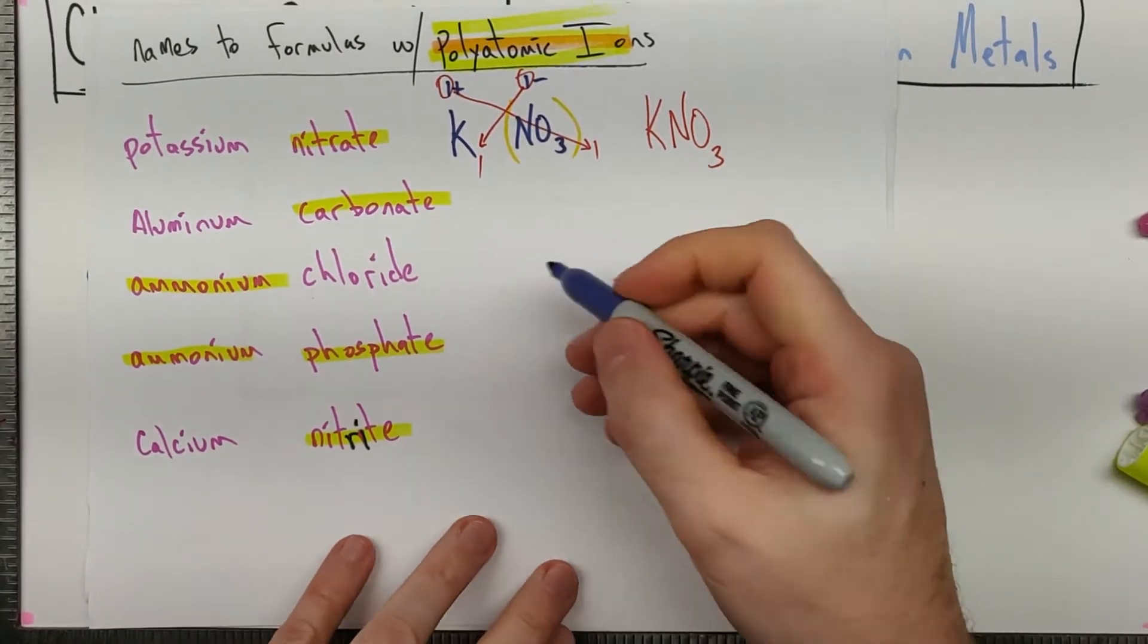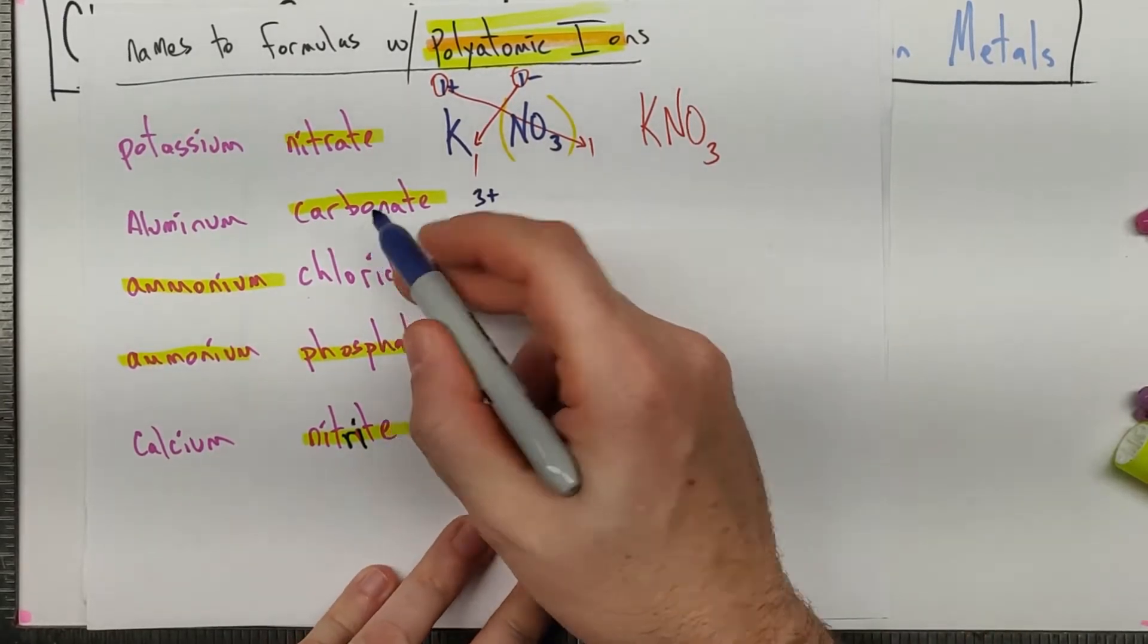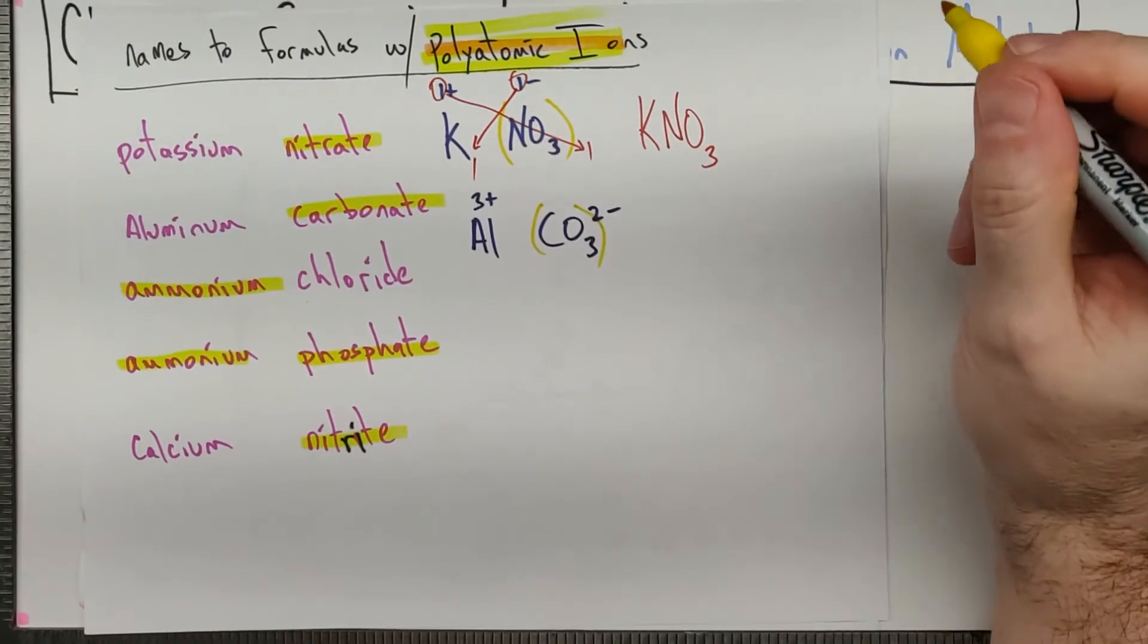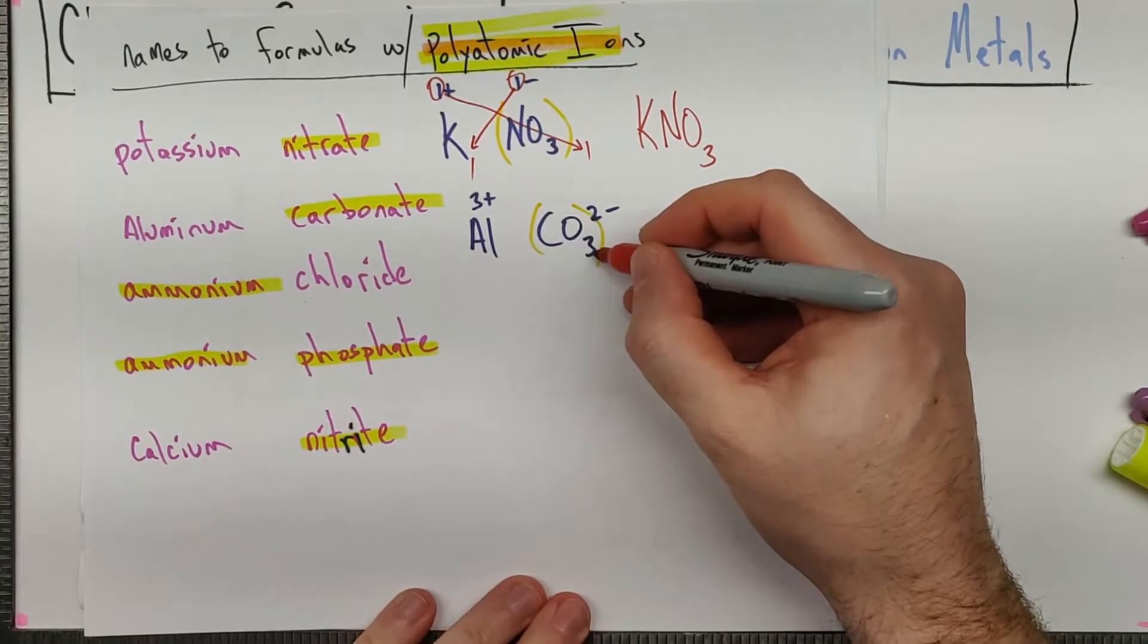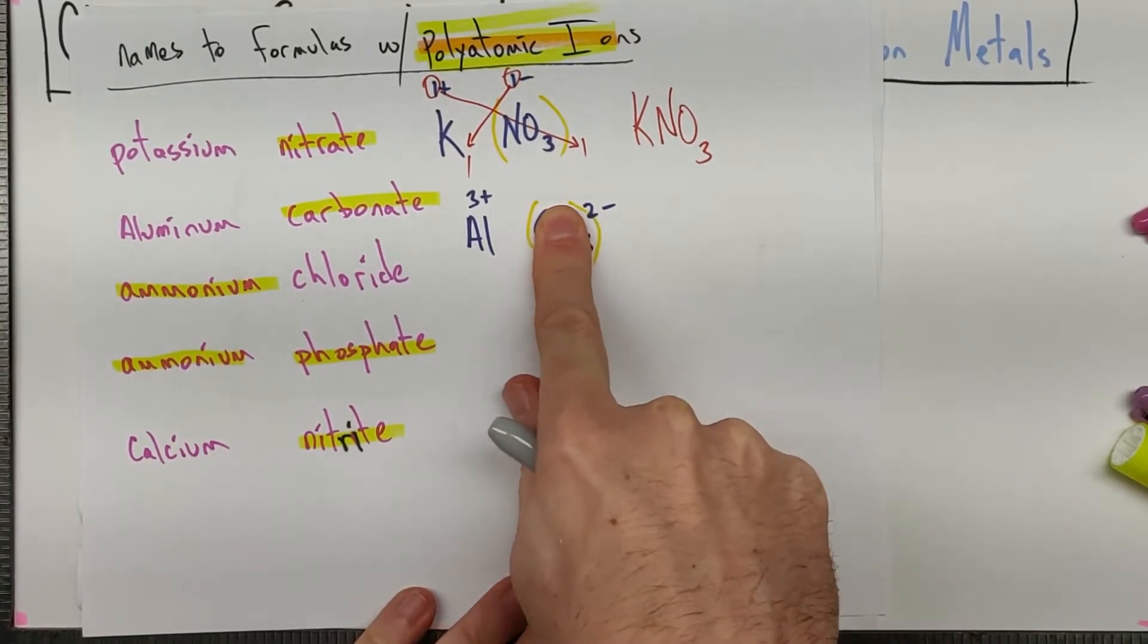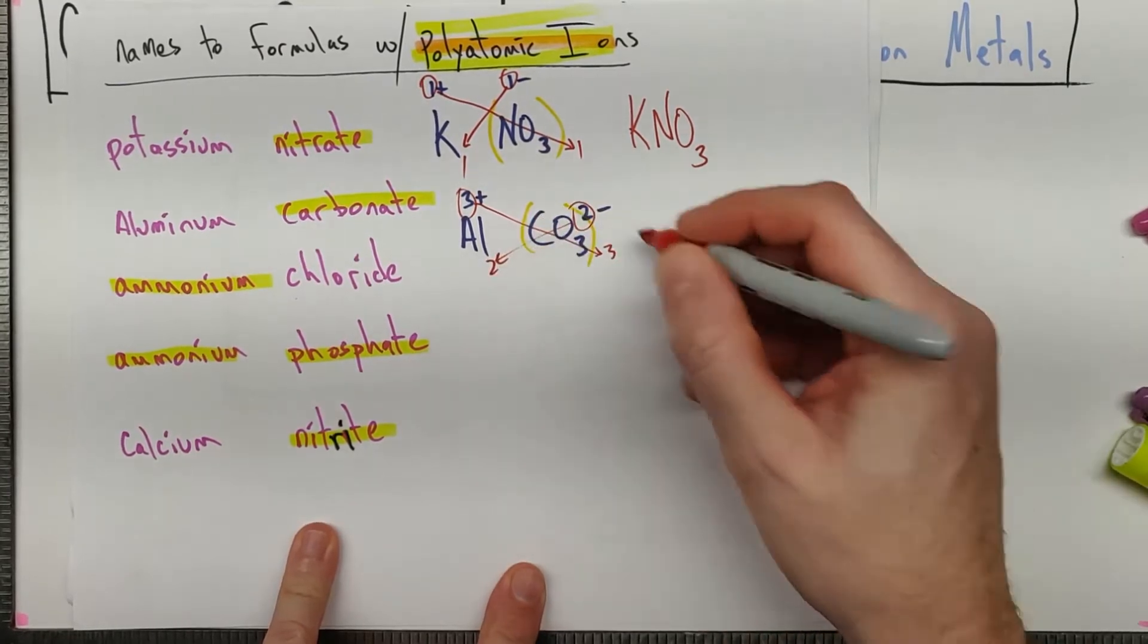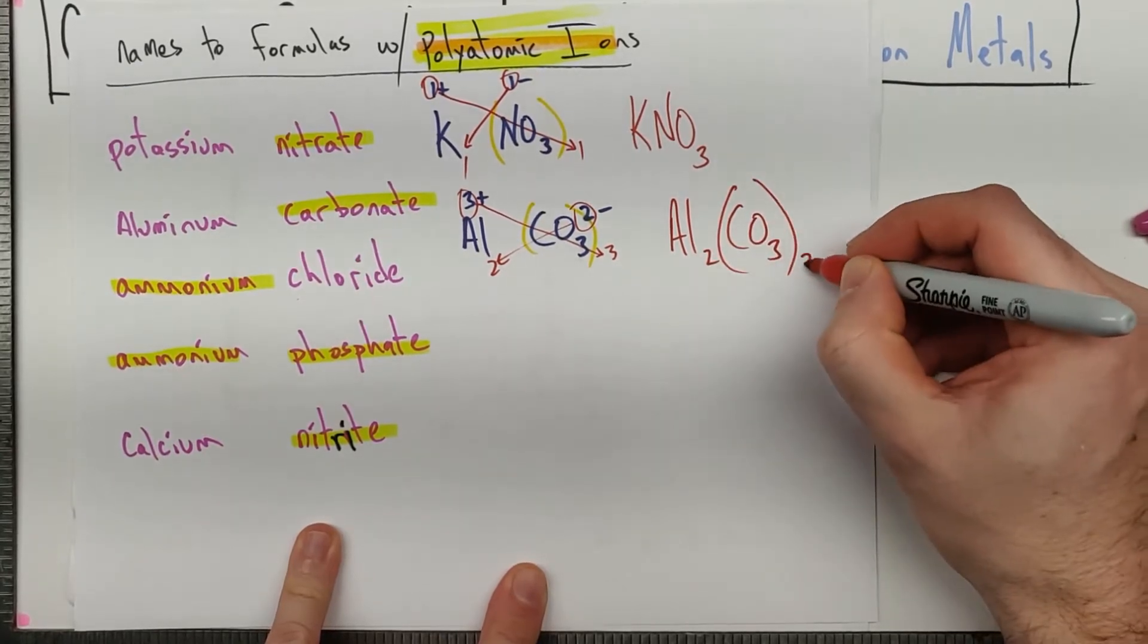Similarly, as we look at the aluminum carbonate, aluminum is a three plus. It's in group 13 on the periodic table. Carbonate is CO3, two minus. What I recommend is just throw a parenthesis around your polyatomic ion to start off. And then when you crisscross, you don't have to worry about these things right here. You don't get to change the formula of the polyatomic ion.